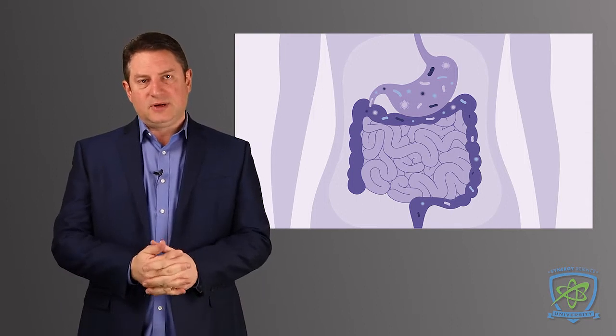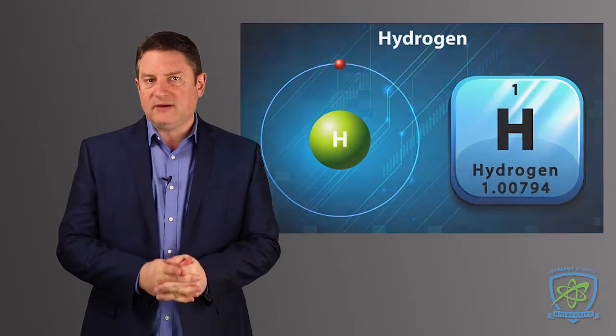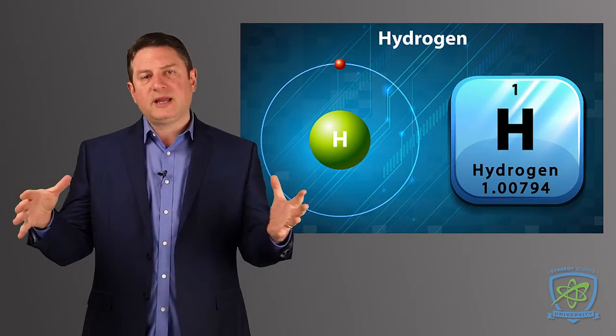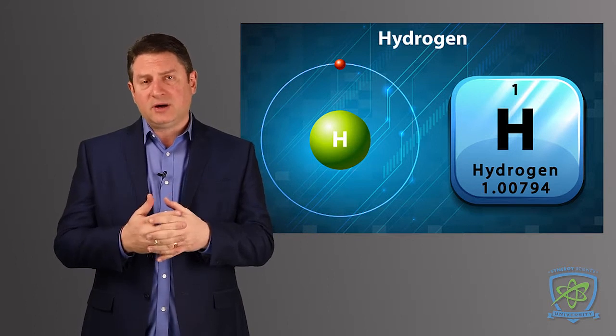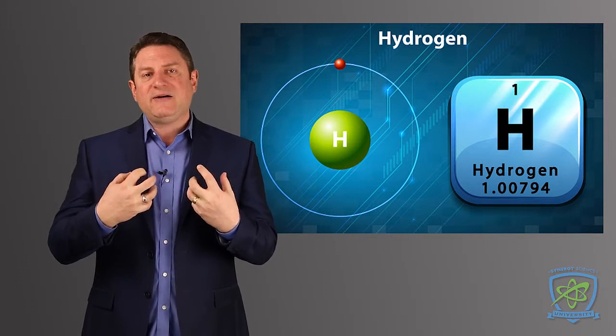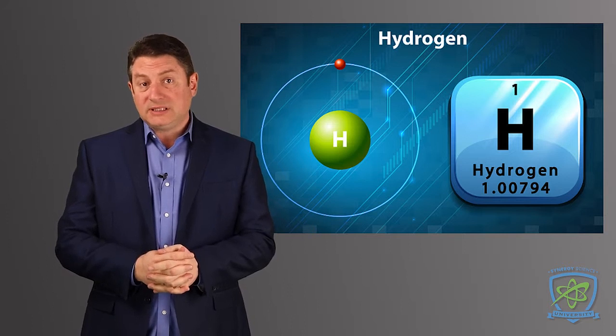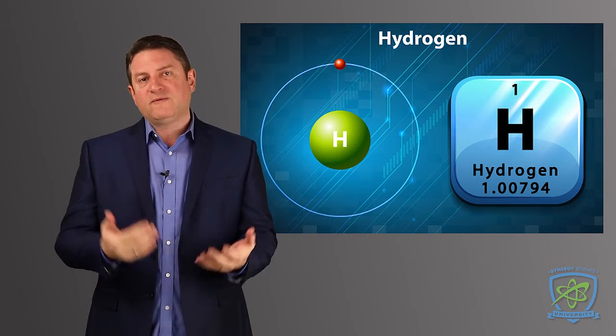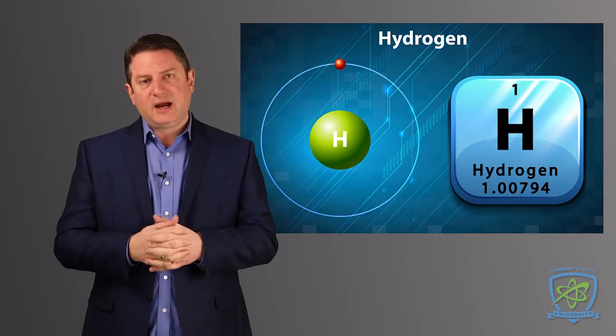Well, we call it flatulence, right? Well, what's flatulence made of? Hydrogen, methane, other gases, but hydrogen is a big part of that. So we have a hydrogen generator built into our body, in our gut. When we're fermenting food, we create hydrogen.